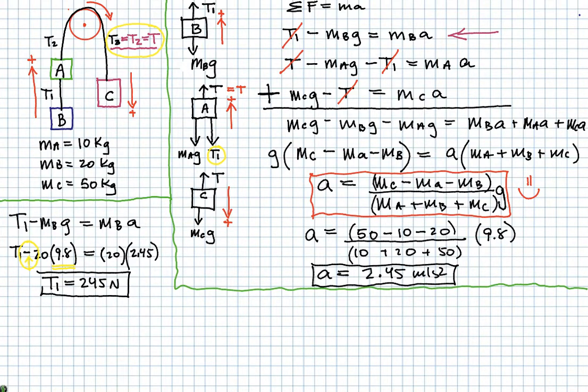So I can use probably the equation right here, this one, that I used for, or developed for object C. That's probably the easiest one to write down. So let's do that. So that would be MCG minus T is equal to MCA. Plug in the numbers.